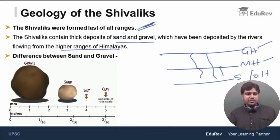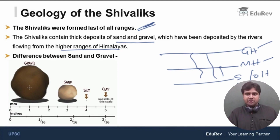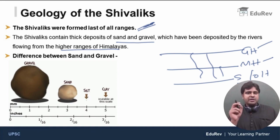What do we mean by sand and gravel? The particles of soil vary in size. The smallest particle is clay; next you have silt; and then you have sand and gravel. Of all soil particles, gravel is the largest, the next largest is sand, then silt, and the smallest particle of soil is clay. That is the difference between sand and gravel.